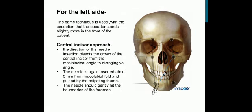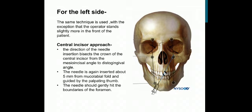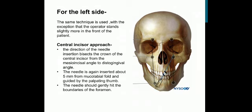For the left side, the same technique is used, with the exception that the operator stands slightly more in front of the patient. In the central incisor approach, the direction of needle insertion bisects the crown of the central incisor from the mesio-incisal angle to the disto-gingival angle. The needle is inserted about 5 mm from the mucobuccal fold and guided by the palpating thumb, and should gently contact the boundaries of the foramen.